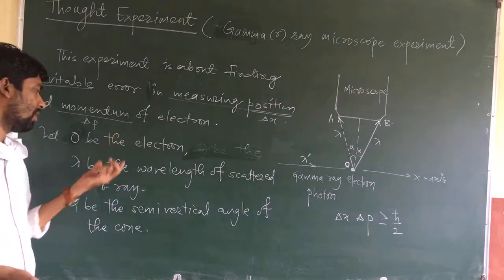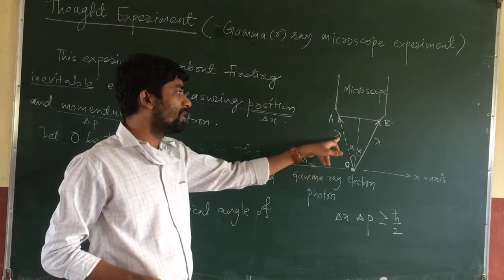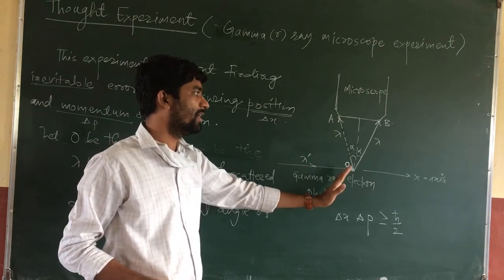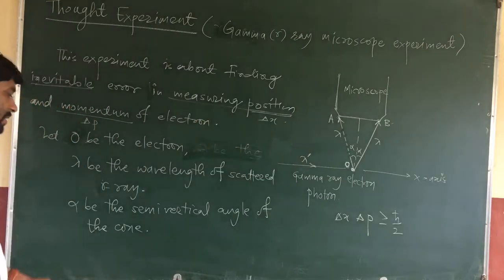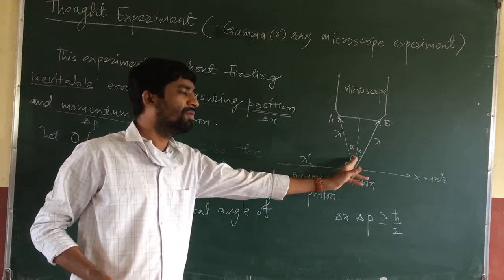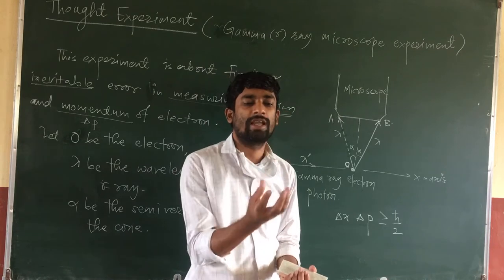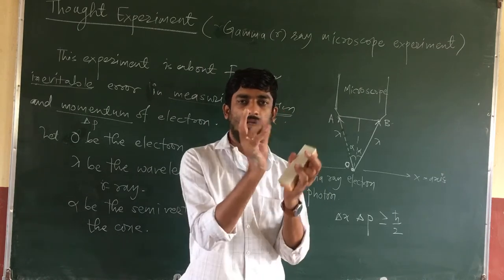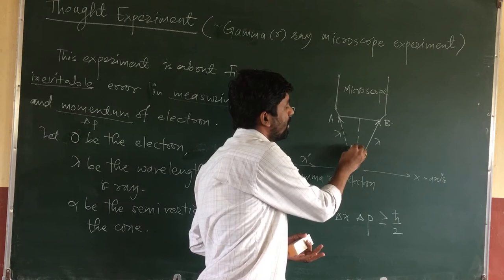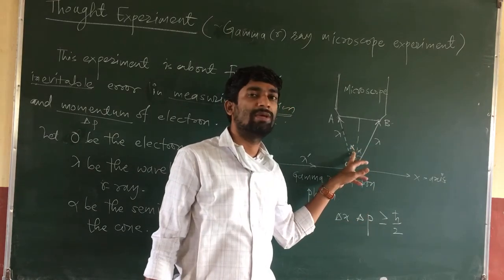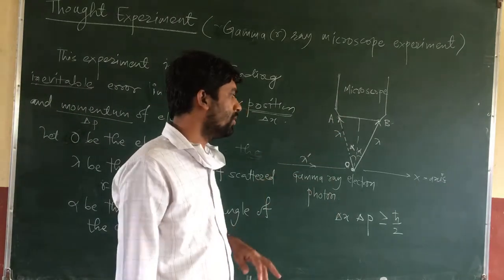Let O be the position of the electron and lambda be the wavelength of the scattered gamma rays. The gamma rays move upward along OA and along OB, both with wavelength lambda. Alpha is the semi-vertical angle — if this is the objective of the lens, the rays move along the lens curvature forming a cone, so alpha is the semi-vertical angle of that cone.